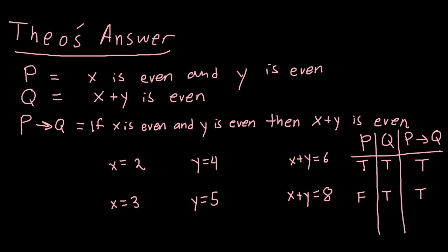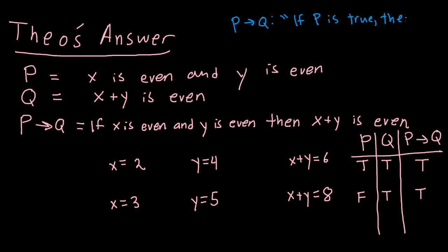We need false to imply true in order for sentences like this one to be correct. One way to think about P implies Q is the English sentence: 'if P is true, then Q is true.' Because I've phrased it slightly differently, it's easier to see the false implies true case — if P is false, Q could still be true anyway. Just because P isn't true doesn't necessarily mean that Q is false.